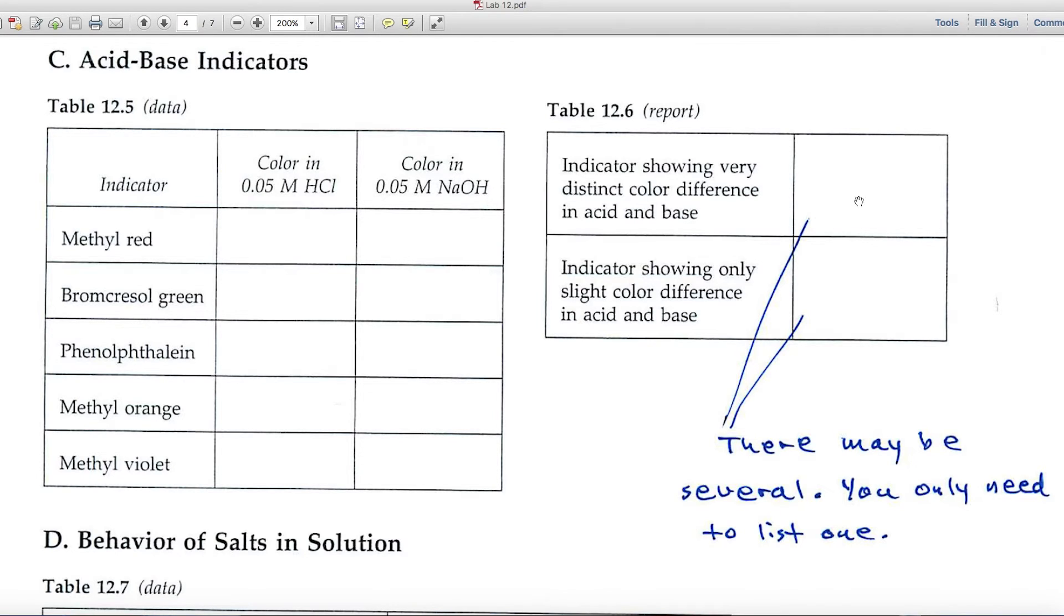Over here in the report page is where you select an indicator that showed distinct color difference in acid and base. There might be a couple of good ones, but you only need to enter one, so you wouldn't have to list them all.